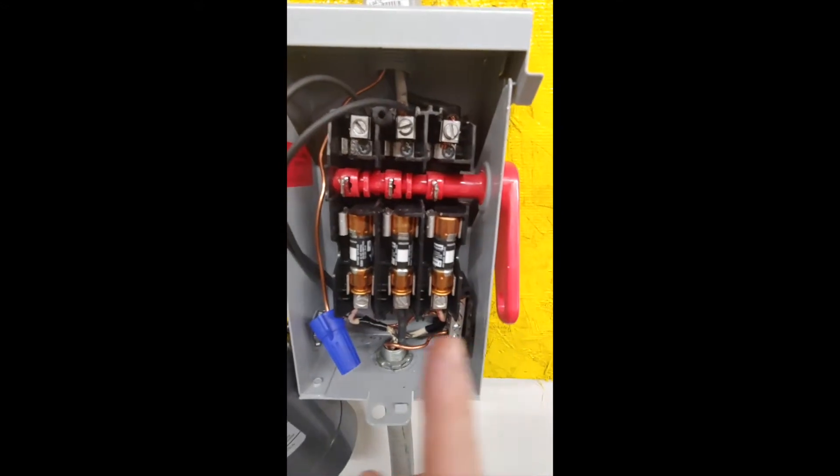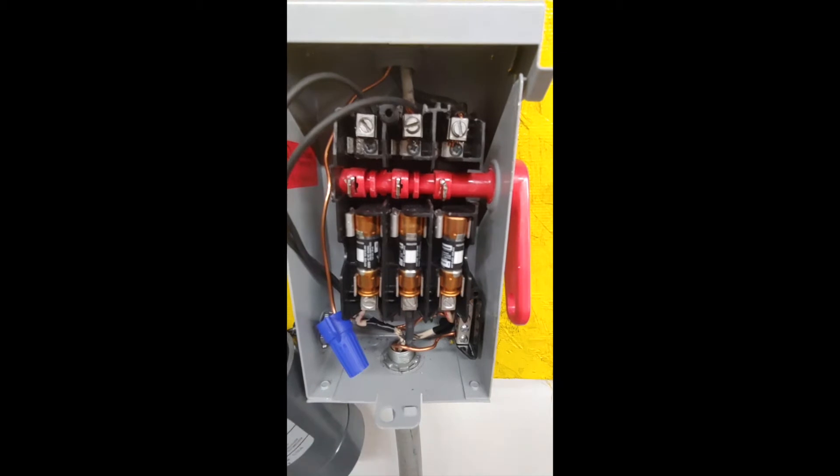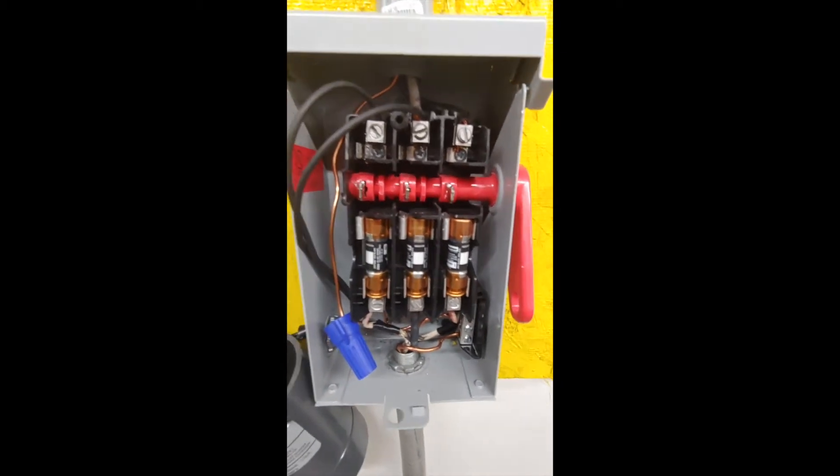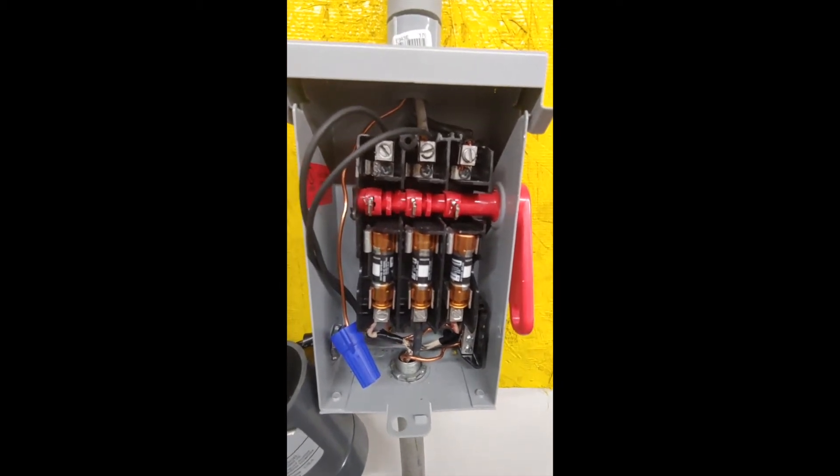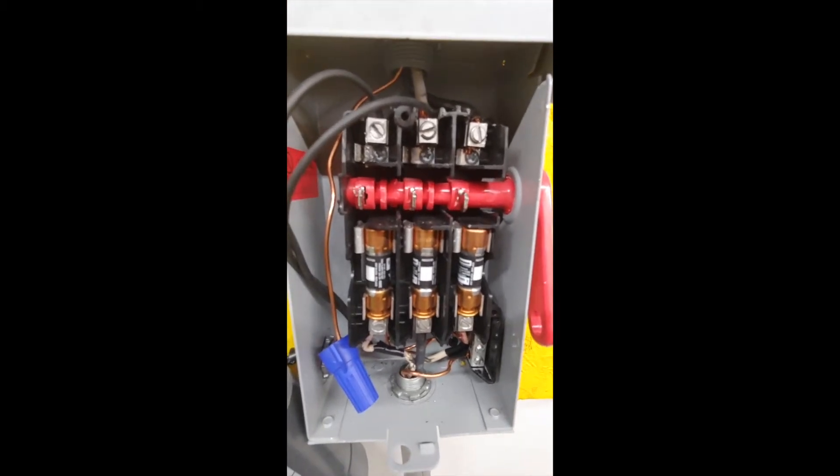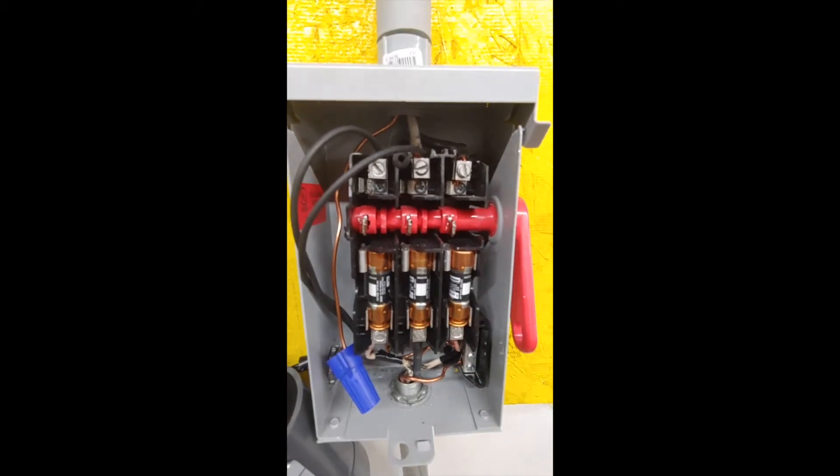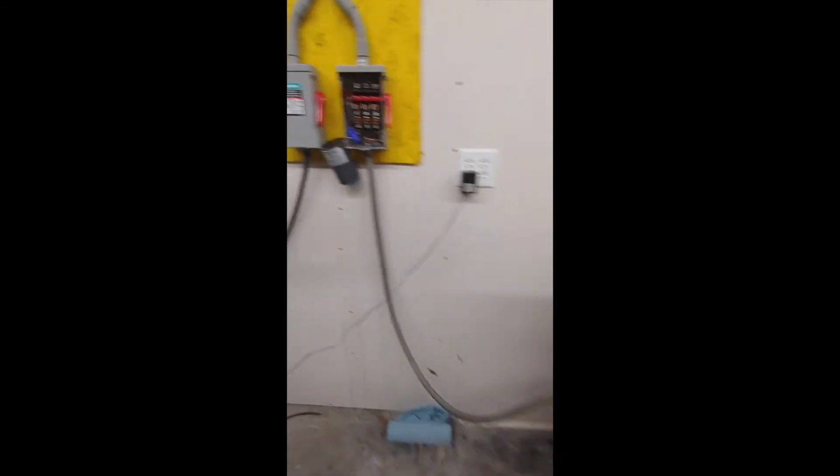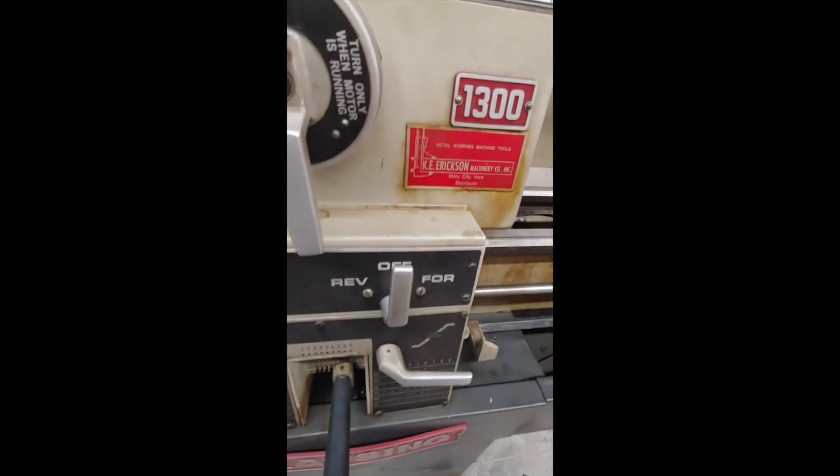These are 30 amp slow blow fuses. Because this motor is rated at 15 amps, 1.5 times is about 23, 24 amps. Next up is 30. What are the control wires? Well control wires are... Here's the switch, forward and reverse.